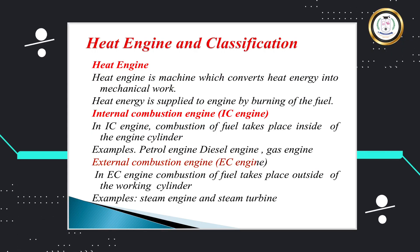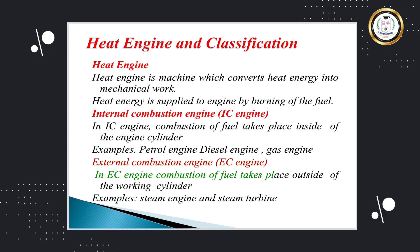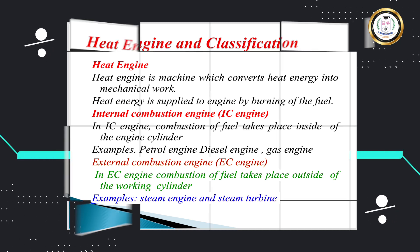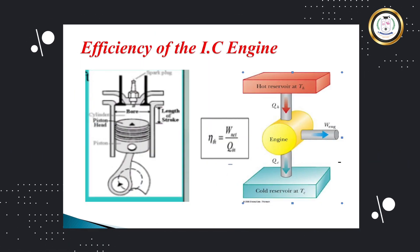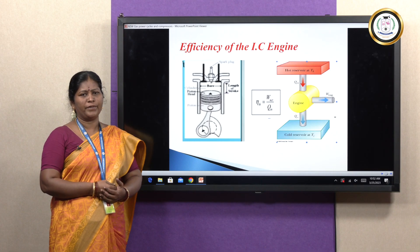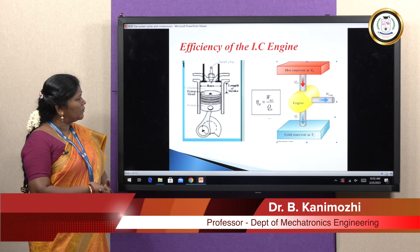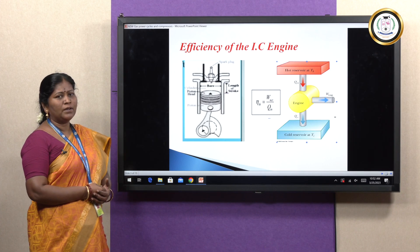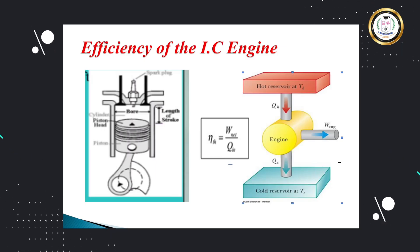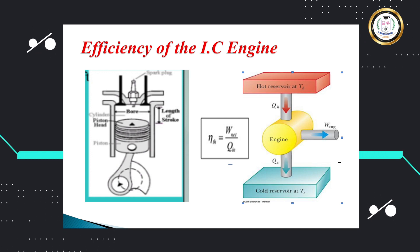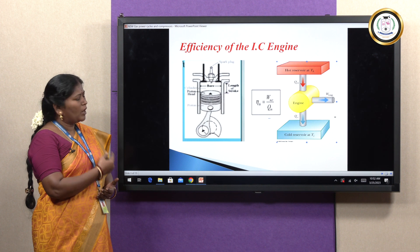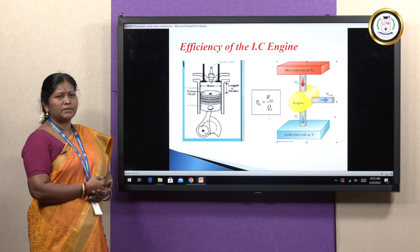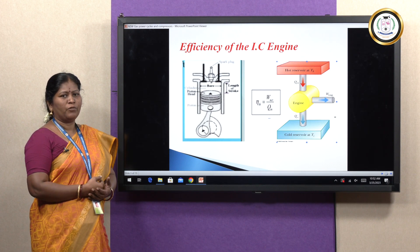In the external combustion engine, the combustion of fuel takes place outside of the working cylinder — for example, steam engine and steam turbine. Now, this is a schematic diagram of the IC engine system. The main components of an IC engine are the cylinder, bore and piston, piston rod, crankshaft, and connecting rod. The crankshaft is connected to the piston rod by means of the connecting rod, along with the inlet valve and outlet valve. Power from the combustion process is received from the crankshaft and transmitted to the wheel system for moving the vehicle.